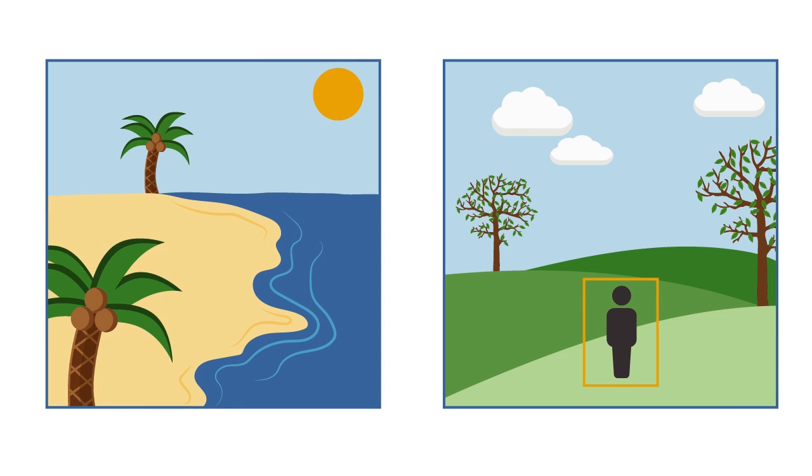You can train a CNN to do image analysis tasks, including scene classification, object detection and segmentation, and image processing.